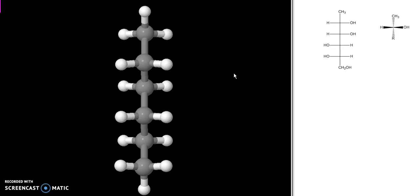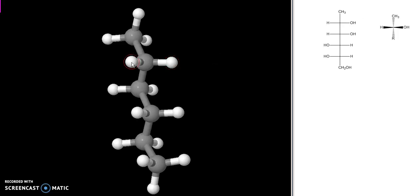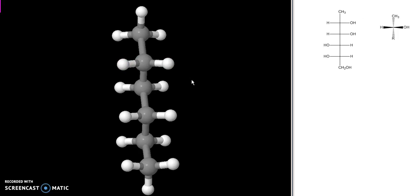The key thing to remember, again, is that the horizontal groups are coming out towards me. So I'm going to display it with my two horizontal groups coming out towards me. And when I do that, I notice that the group on the right is an OH. So I convert it to an OH.